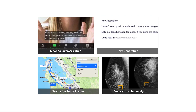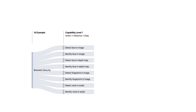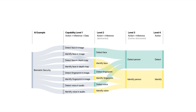We analyzed these bottom-up to derive high-level capabilities. Take biometric security as an example: AI is detecting if there's a face in an image, and then identifying if this is Jane's face — those are two separate capabilities. We listed each unique capability for each AI example, then abstracted these to arrive at the high-level capability. Detecting a face and detecting a voice is ultimately about detecting a person, so all of these led to 'detect' as the high-level capability.